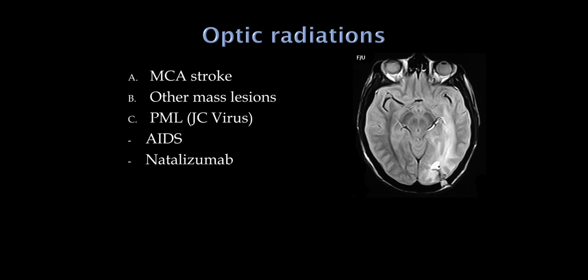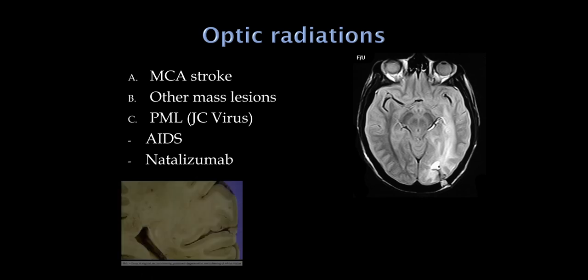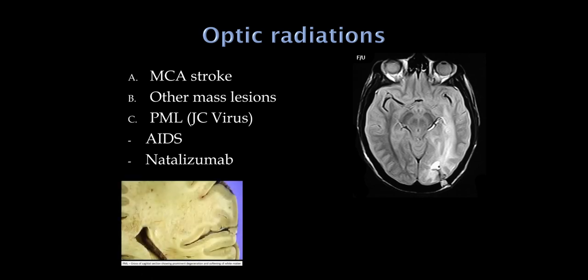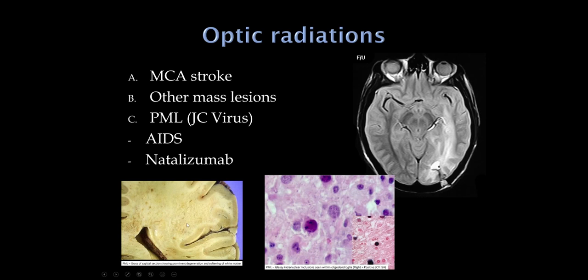PML is a condition that spreads and has a very poor prognosis, so we often do a biopsy. At autopsy, you would see prominent degeneration of the white matter. On biopsy, what we're looking for are glassy intranuclear oligodendroglia inclusions.